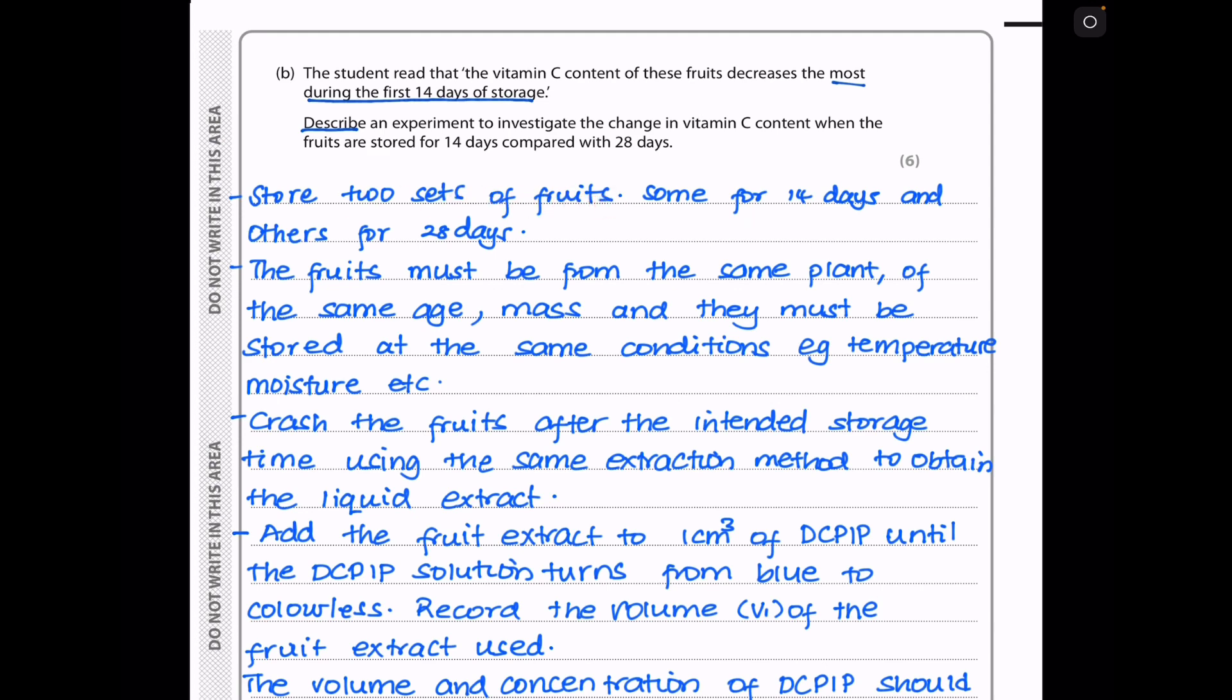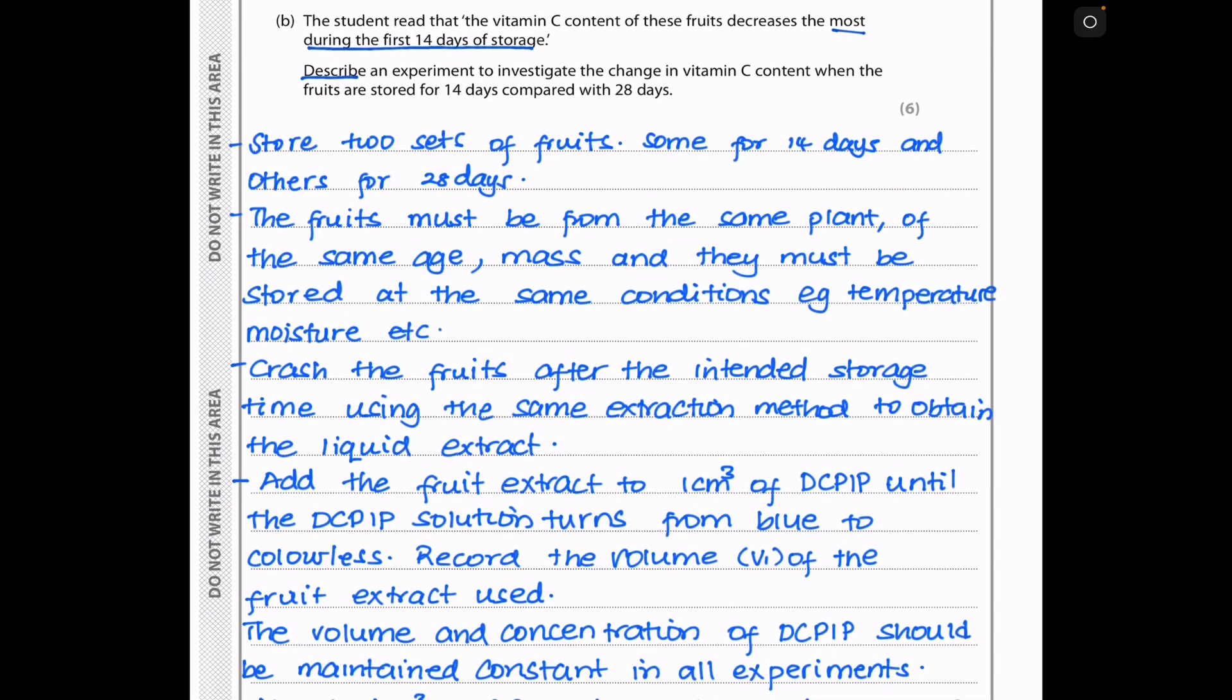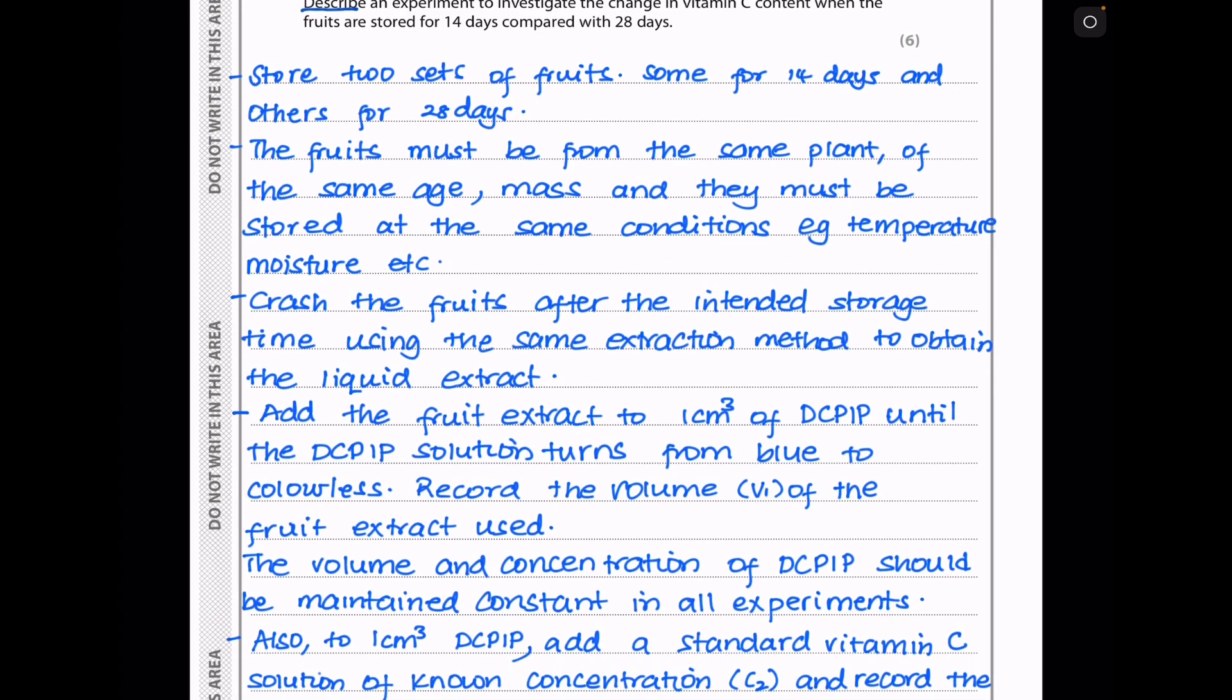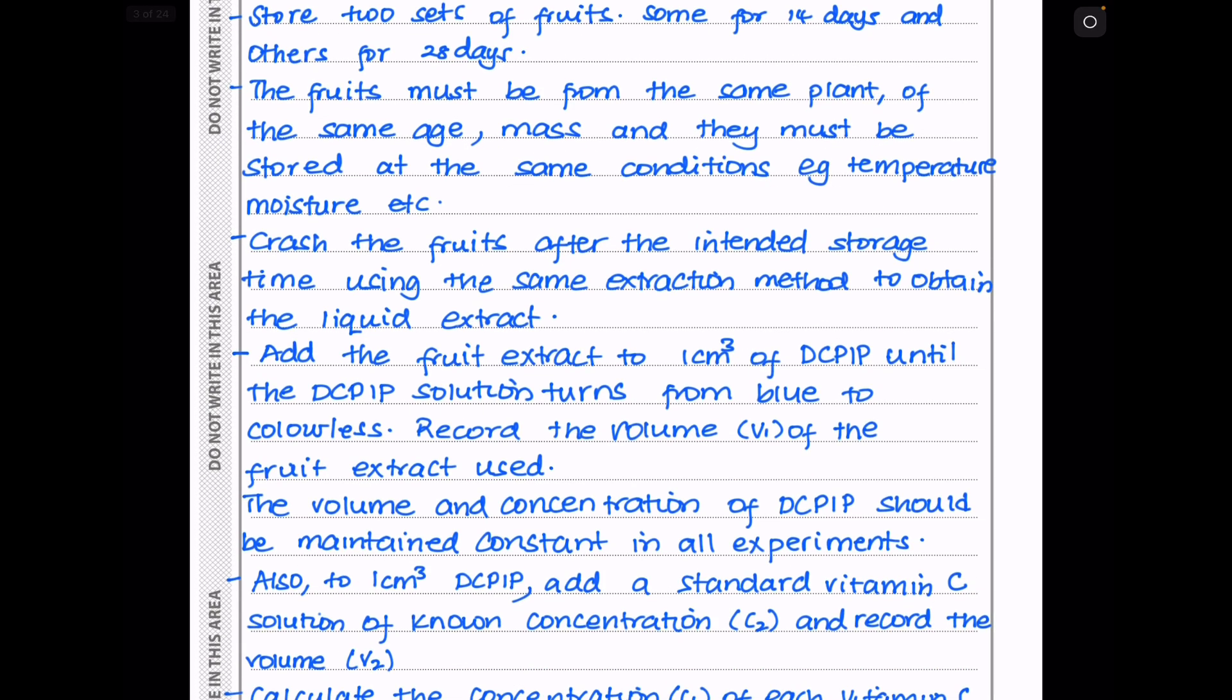So I said store two sets of fruits, some for 14 days and others for 28 days. The fruits must be from the same plant, of the same age, same mass, and they must be stored at the same conditions. For example, they should be stored at the same temperature and moisture content. To obtain the vitamin C extract, you need to crush the fruits after the intended storage time using the same extraction method, and this will give you the liquid extract.